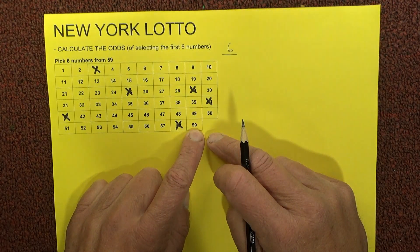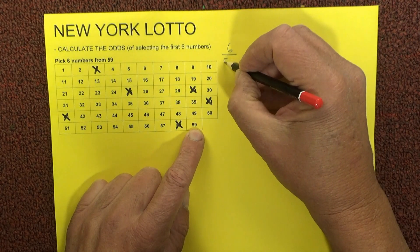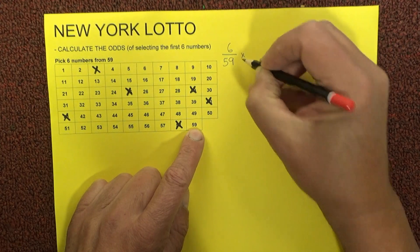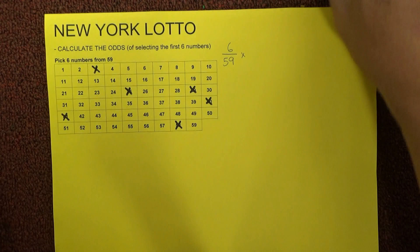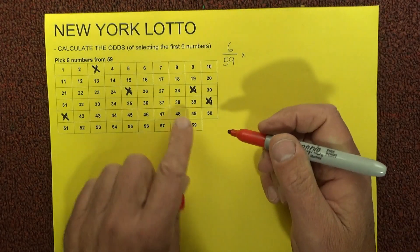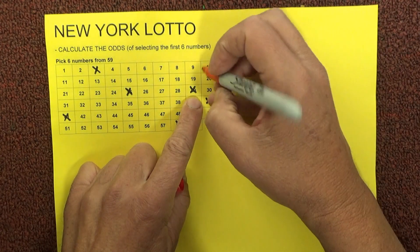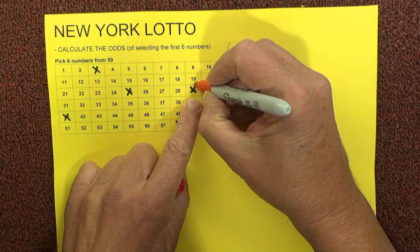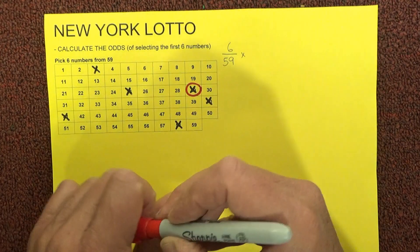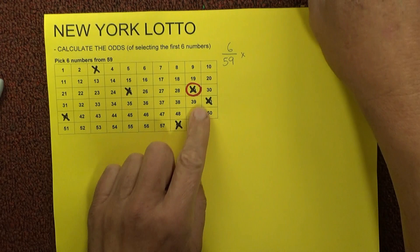You've got 1, 2, 3, 4, 5, 6 - six chances. There's 59 balls to choose from in the barrel, so you've actually got six chances in 59 of matching the first number that's drawn. It doesn't matter what order the numbers come out in. I'll just randomly circle one of those numbers to indicate that you've matched number 29.